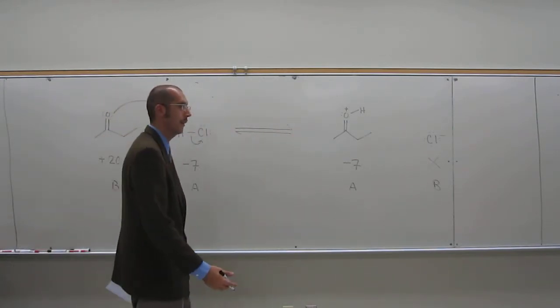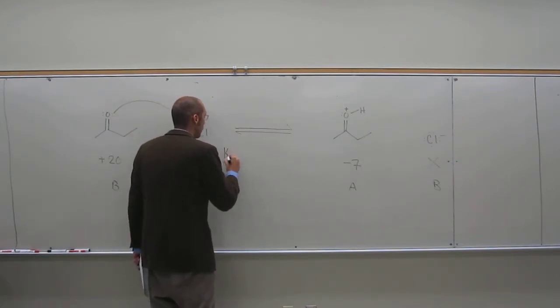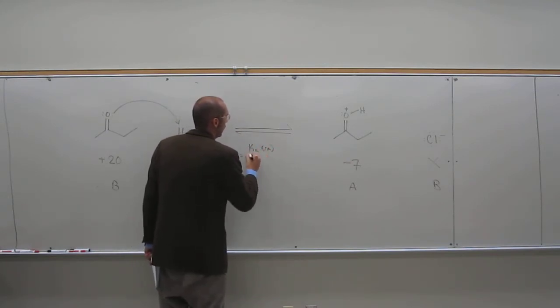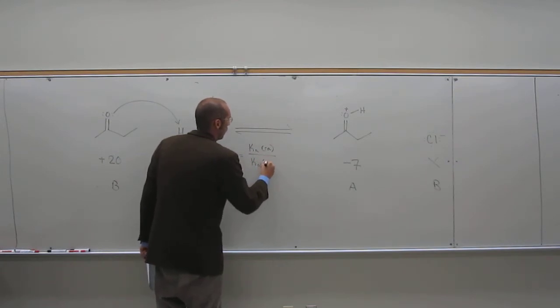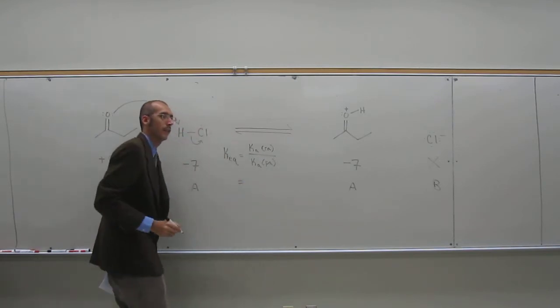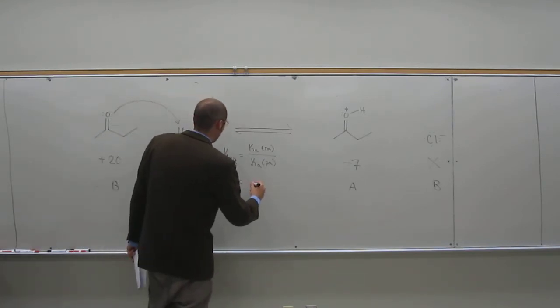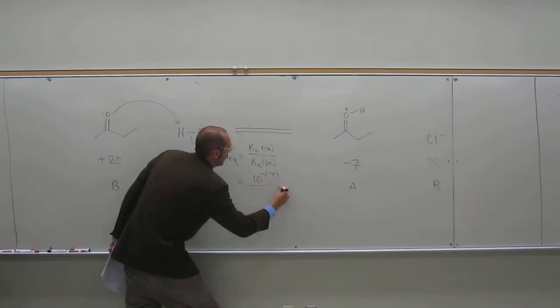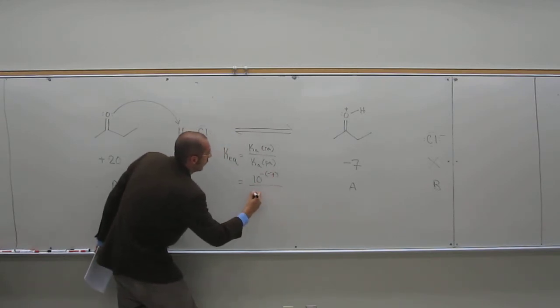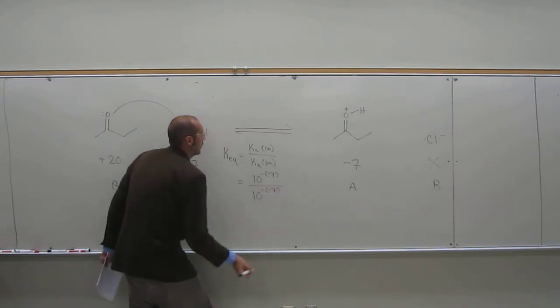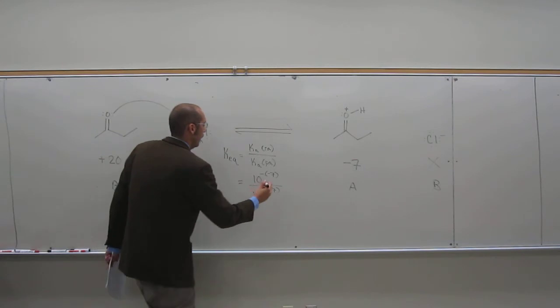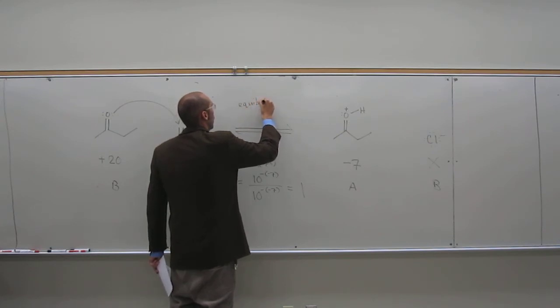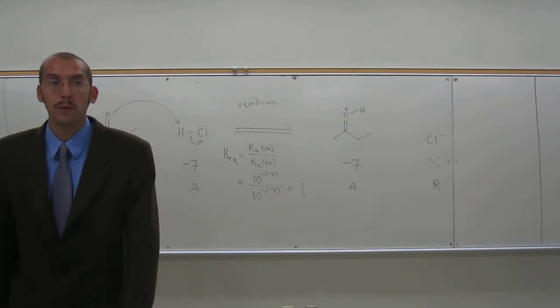Let's just see if that comes out. Do you guys remember what the equation for KEQ is? KA of the reactant acid over KA of product acid. Hopefully you guys can already see what's going on. What's the KA of the reactant acid going to be? 10 to the negative 7, or 10 to the 7th. And the bottom? 10 to the negative 7. So, what's 10 to the 7th over 10 to the 7th? 1. So, when your KEQ equals 1, you're in equilibrium. You should remember that from general chemistry.